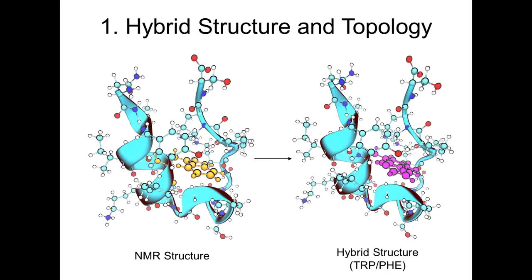The first step of an alchemical mutation simulation is to generate a hybrid structure and topology, and PMX is perfectly suited for this task. On the left you see the NMR structure from the protein databank, and on the right is the hybrid structure we want to construct — containing the side chains of both tryptophan and phenylalanine. Setting lambda equals zero gives only the tryptophan; lambda equals one gives only the phenylalanine; values in between are some portion of each.